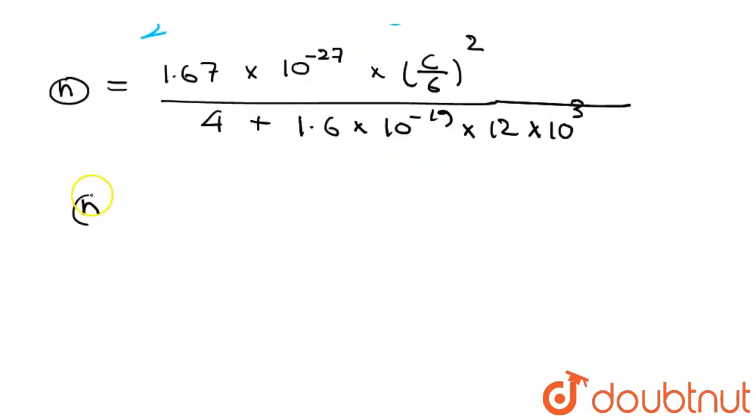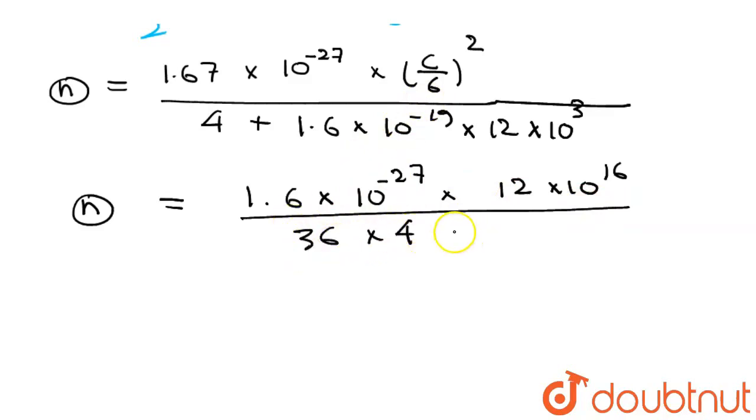So n will be 1.6 × 10⁻²⁷ times 12 × 10¹⁶ divided by 4 times 6, that is 36, times 4 times 1.6 × 10⁻¹⁹ times 12 × 10³.